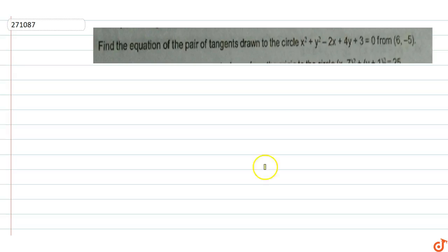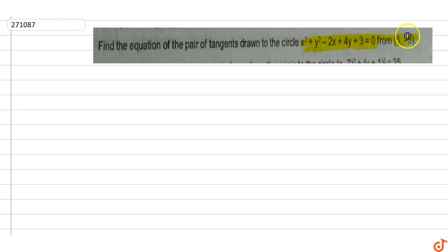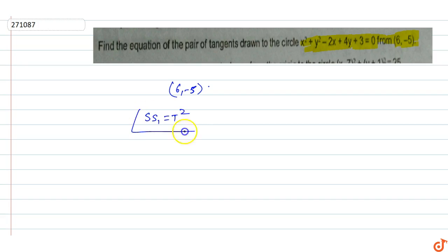In this question, find the equation of pair of tangents drawn to the circle x² + y² - 2x + 4y + 3 = 0 from the point (6, -5). For the pair of tangents drawn from the point (6, -5), we can use the formula SS1 = T².